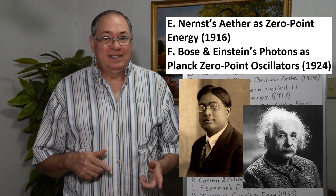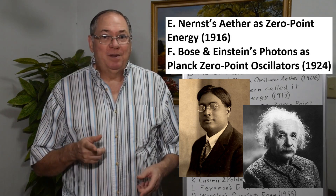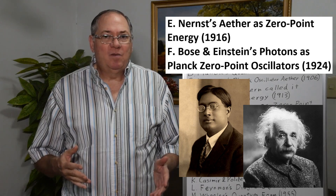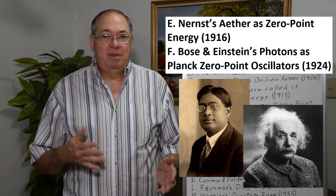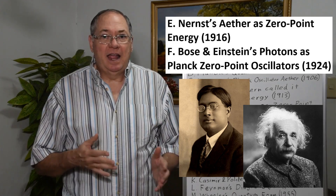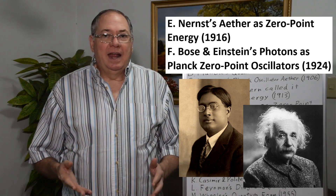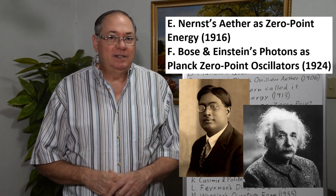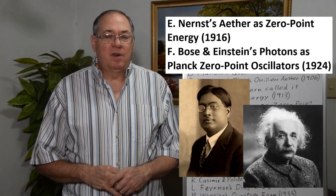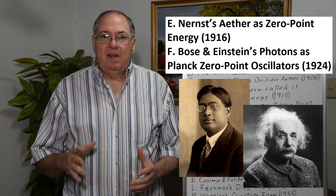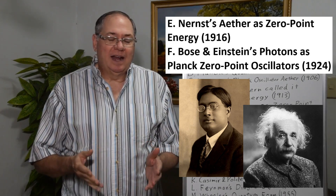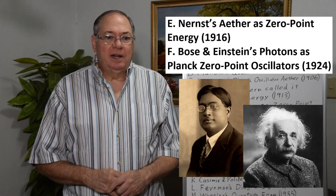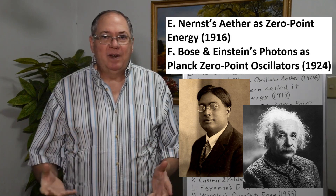Next we have Bose and Einstein. Bose was robbed of a Nobel Prize — he deserved one. Bose came up with the idea of what happens if you have photons that are at Planck's oscillator energy. How would they behave? He sent the paper to Einstein, and they worked together to finish a paper now famous for coming up with a new form of matter. It involves matter getting close to the zero-point energy. So, once again, very important.